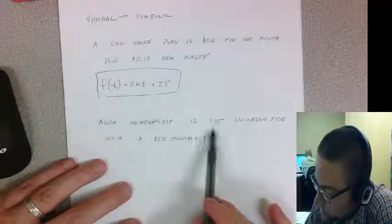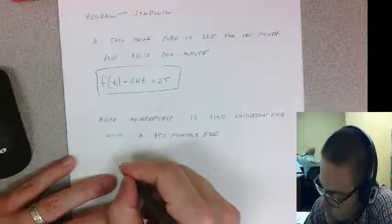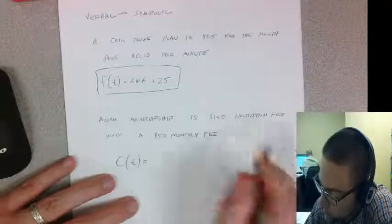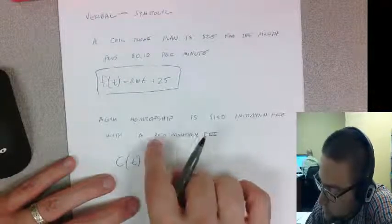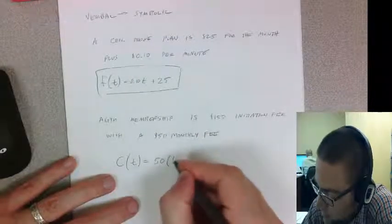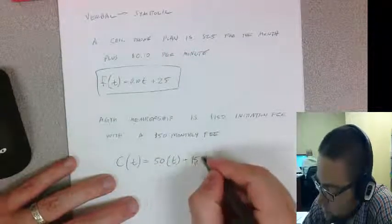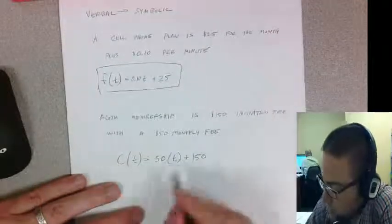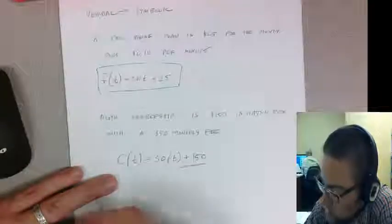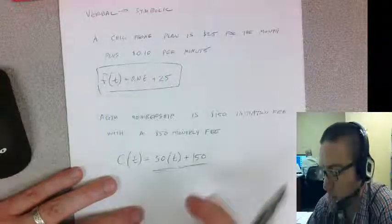A gym membership is a $150 initiation fee plus $50 per month. What is the cost? I'll say c(t) where t is in months. Every month you pay another $50, so 50t, plus the initiation fee of $150: c(t) = 50t + 150. That's how these functions show up in the real world—you have some initial cost plus the rate times the amount of time you're spending.